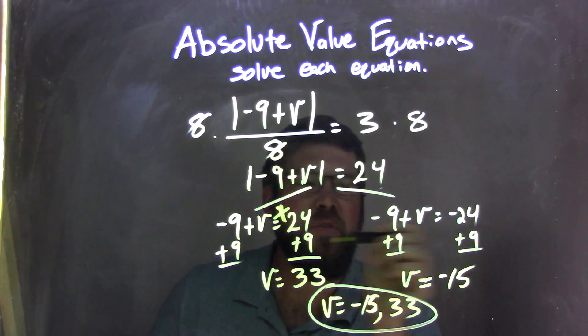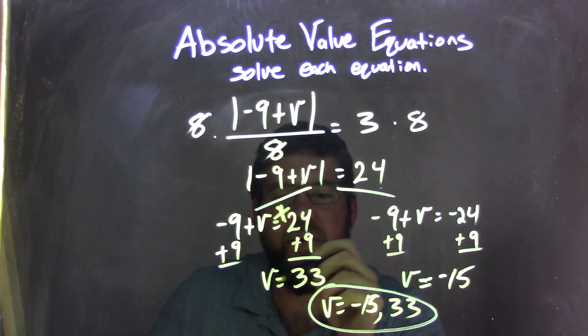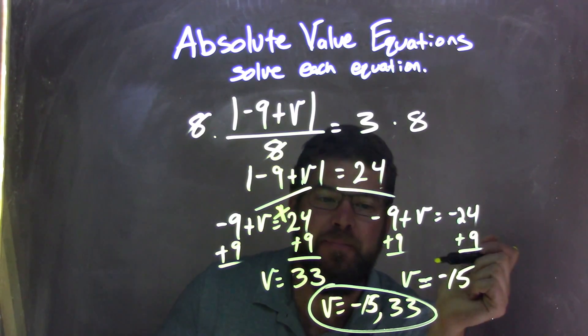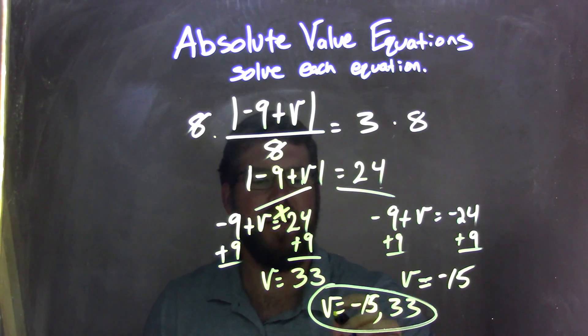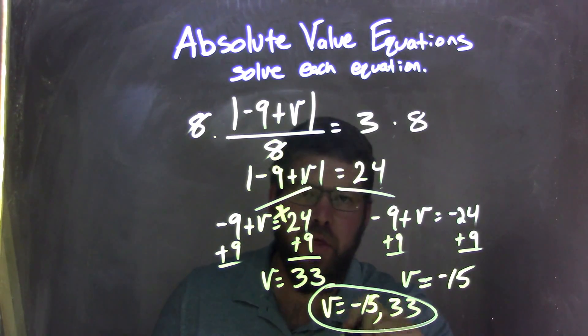To get each variable by itself, I added 9 to both sides of both equations, leaving me with V equals positive 33 and V equals negative 15. I'll write that from least to greatest because it looks nicer, so my final answer is V equals negative 15 and positive 33.